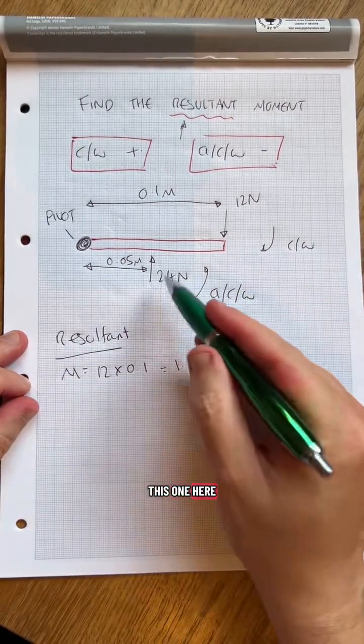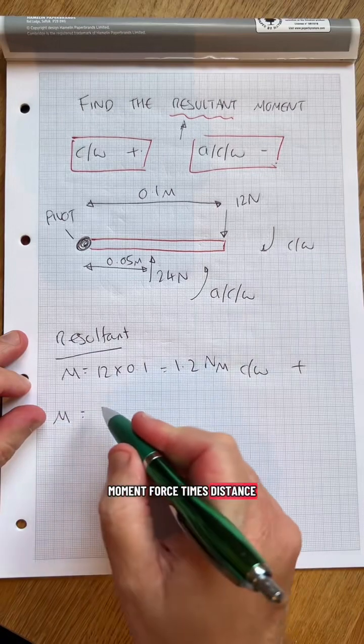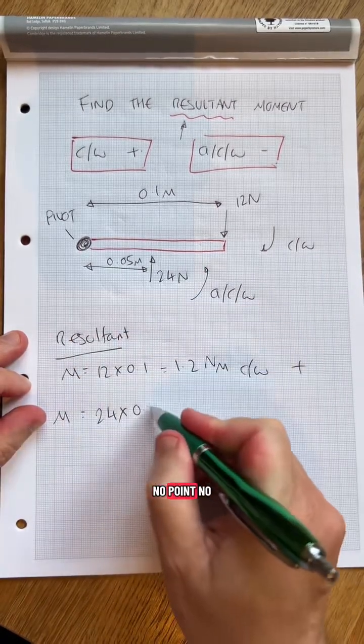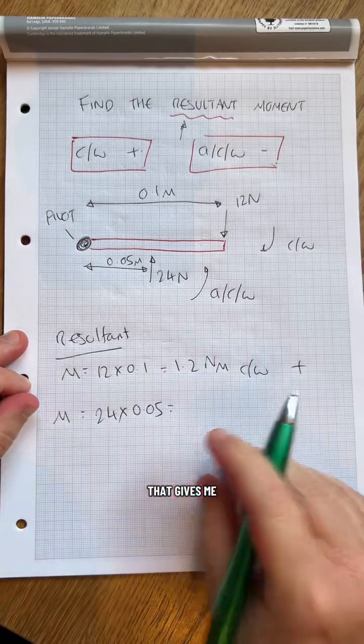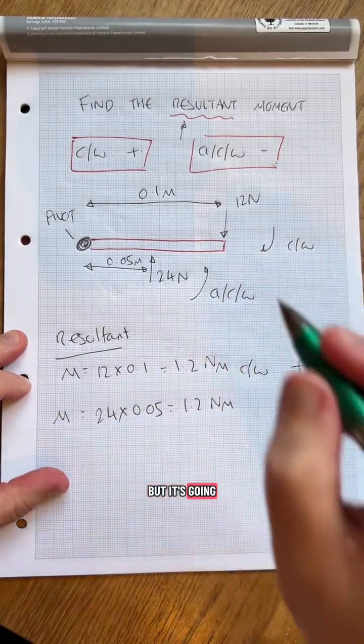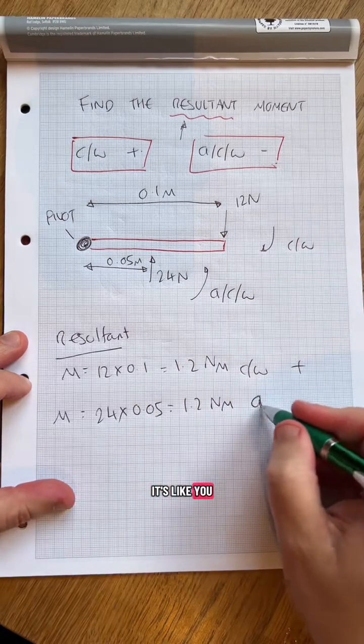This one here is going to be moment force times distance, 24 times by the distance of the pivot 0.05. That gives me 1.2 newton meters, but it's going anti-clockwise. It's like you opening a door from the other way.